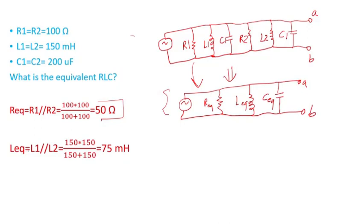Then the equivalent inductance, with L1 and L2 in parallel, is just the product of the inductances divided by their sum, which gives 75 millihenry if you carry out the calculation.